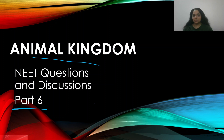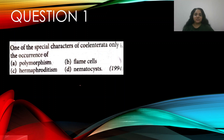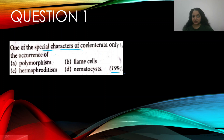Question number one: one of the special characters of Coelenterata only is the occurrence of — this appeared in 1994 — A) polymorphism, B) flame cells, C) hermaphroditism, D) nematocysts. Polymorphism occurs but is not a special character. Flame cells and hermaphroditism are also incorrect. Nematocysts — yes, that's a special character of Coelenterata. The answer is D.